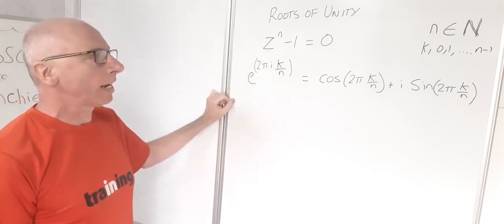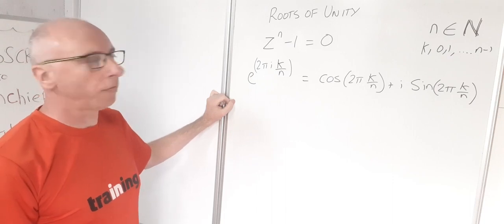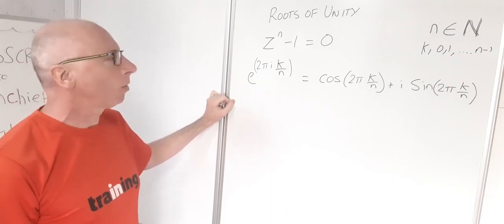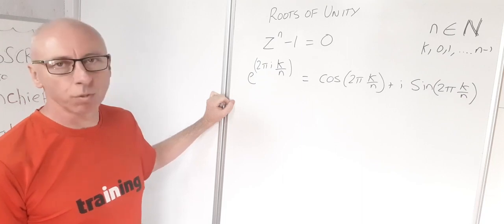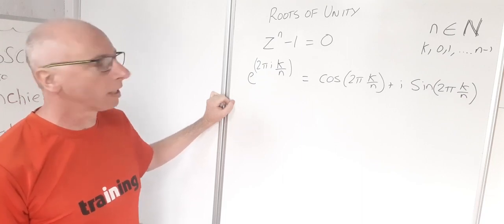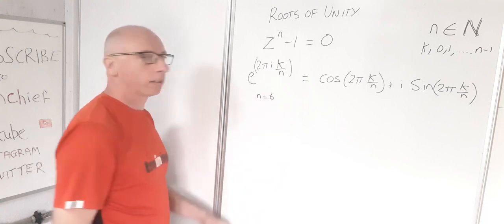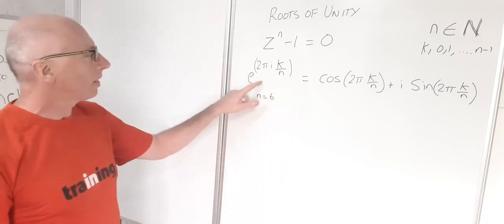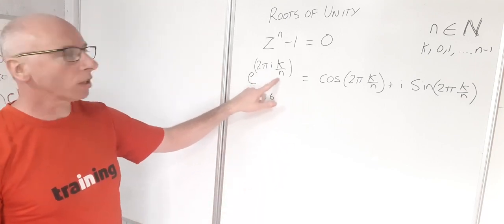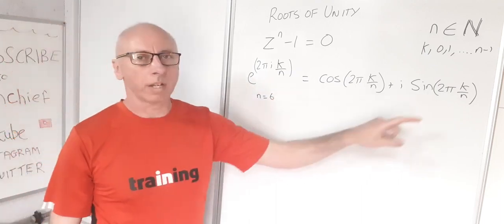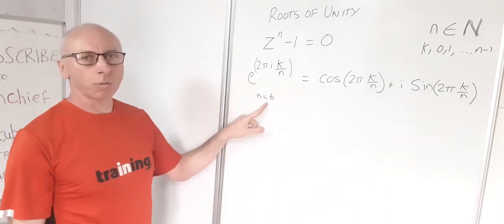Now let's look at an example of our roots of unity and see how we find our primitive roots of unity. For n equals 6, let's look at the exponential form of the solution, which will be quicker to work with than using the Euler identity.